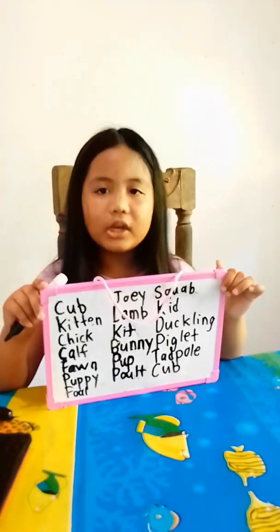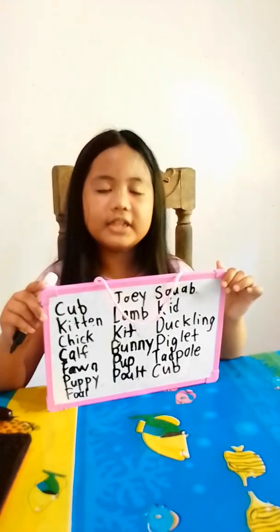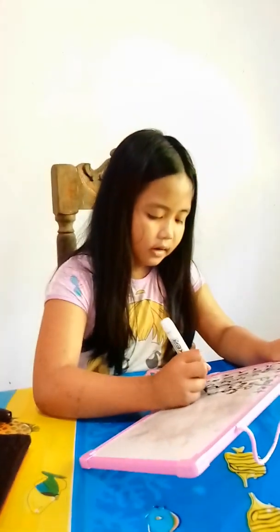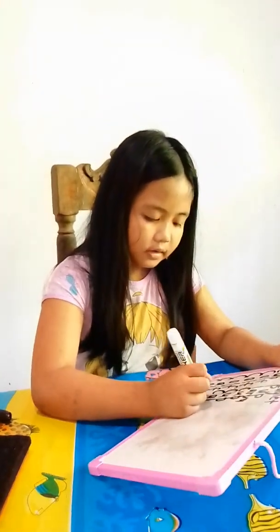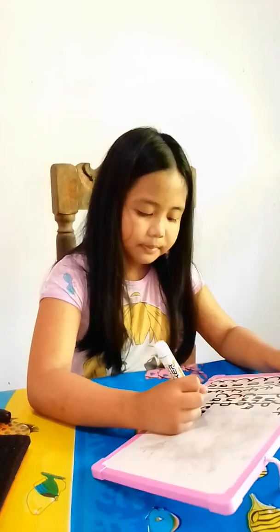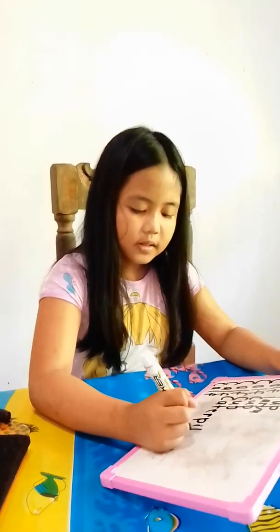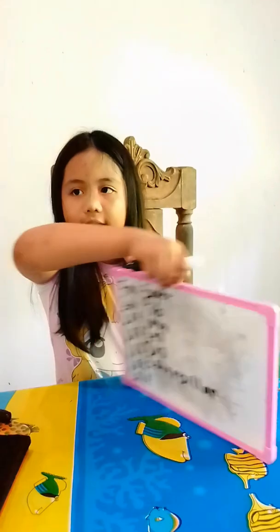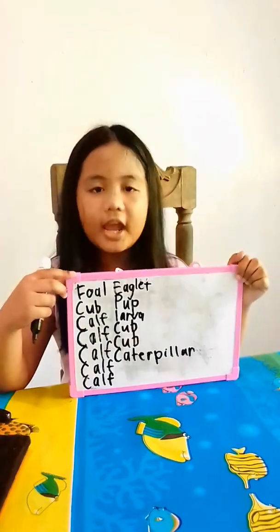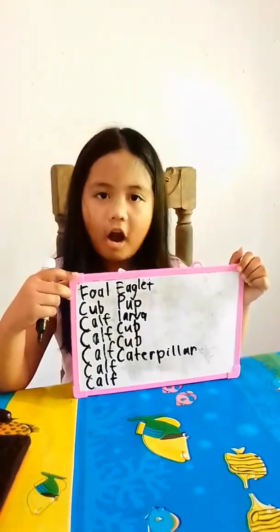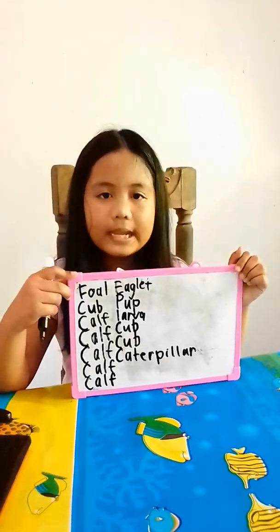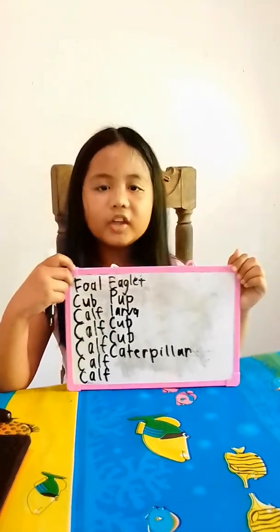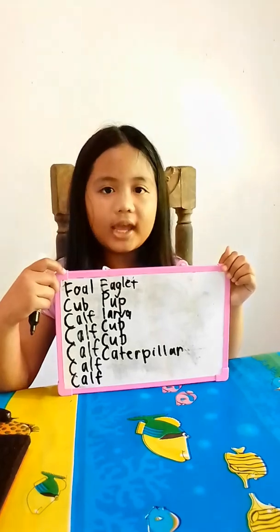The baby of a butterfly is a caterpillar. The spelling is C-A-T-E-R-P-I-L-L-A-R. Thank you for watching and listening.